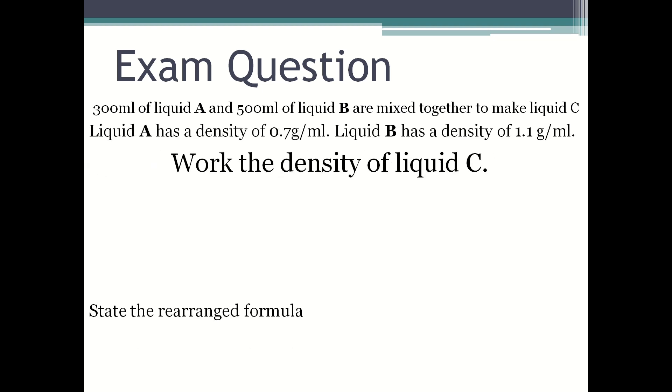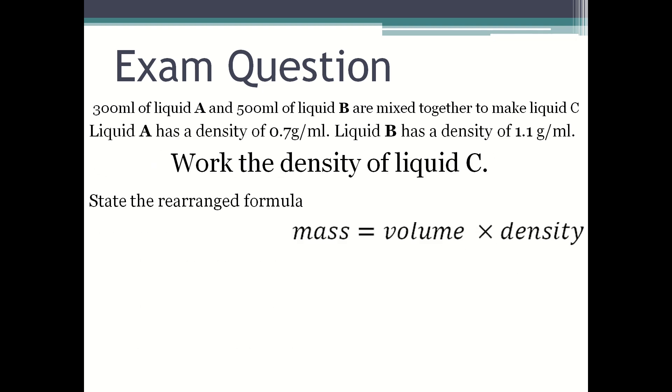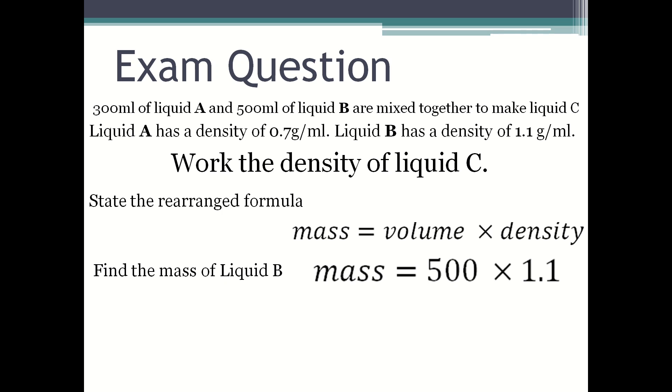State the rearranged formula again and find the mass of liquid B. Mass equals 500 multiplied by 1.1, and that is 550. So the mass of liquid B is 550 grams.